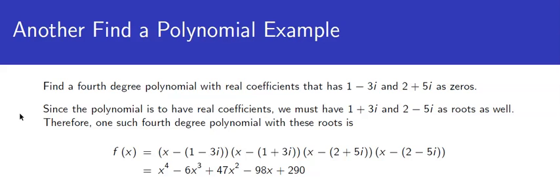So in this one, we were asked to find a fourth-degree polynomial with real coefficients so that 1 minus 3i and 2 plus 5i are zeros.